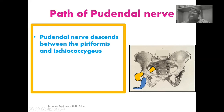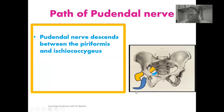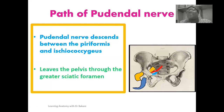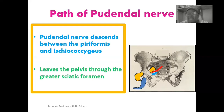The ischiococcygeus muscle, also called the coccygeus muscle, highlighted here in blue, is one of the muscles forming the structural components of the pelvic floor, located at its posterior part. After the emergence of the pudendal nerve from the ventral divisions of the ventral rami of S2 to S4, it passes between the piriformis and the ischiococcygeus, then runs through and exits the pelvic cavity through the greater sciatic foramen.